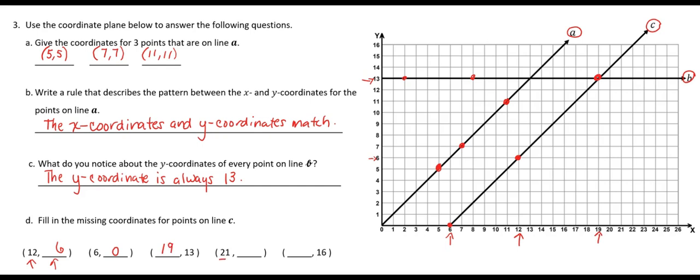And the next one, I'm going to go over 21 and go up until I get to line C. So if I go over to the 21 and go straight up, this point would be on line C, and that's a y-coordinate of 15.